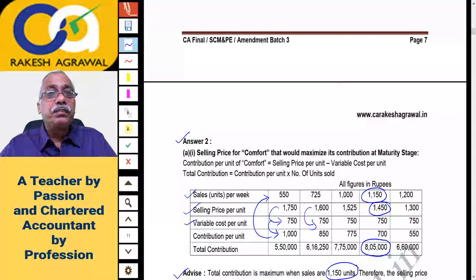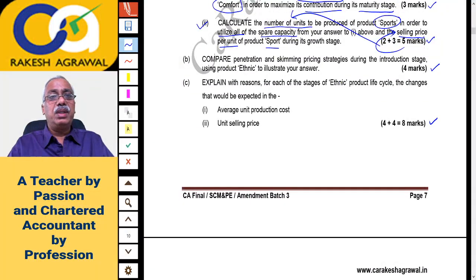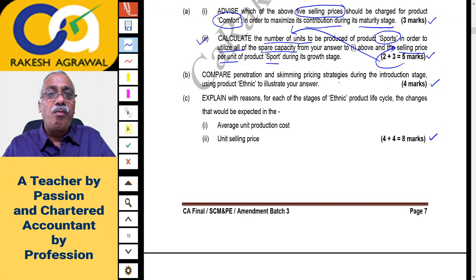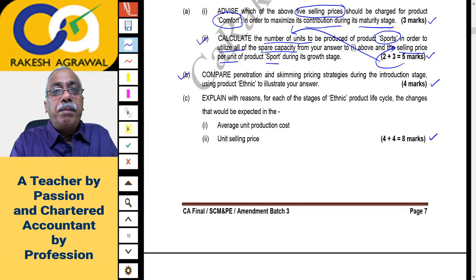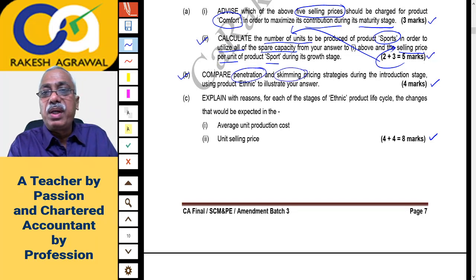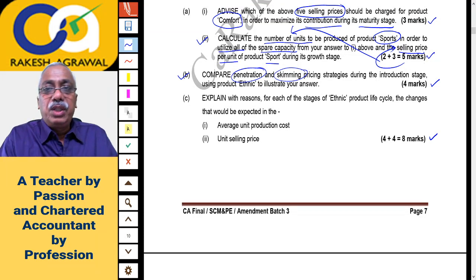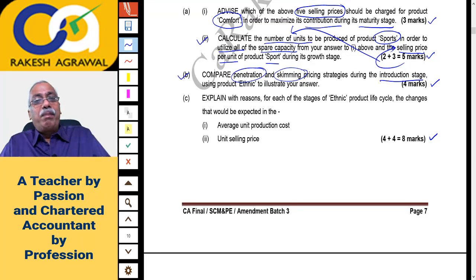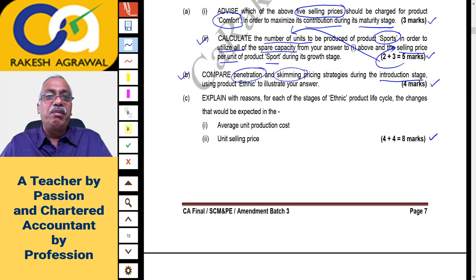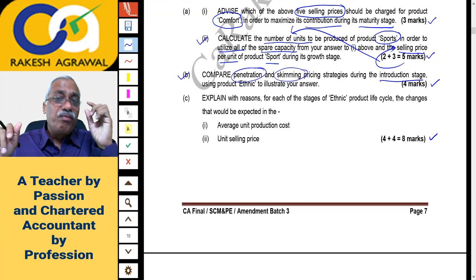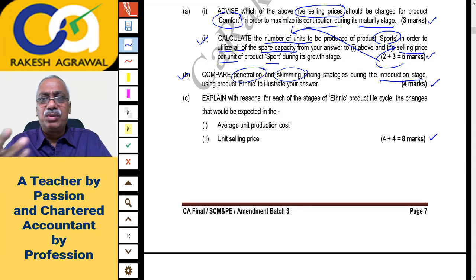Question B (4 marks): Compare penetration pricing and skimming pricing strategies during the introduction stage using Product Ethnic to illustrate your answer. Penetration pricing goes from a lower price to higher prices; skimming pricing goes from a higher price to lower. The answer is printed in the notes and covers differences in different situations — this is a theory question.